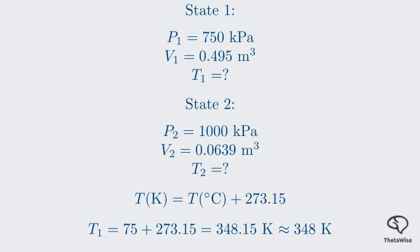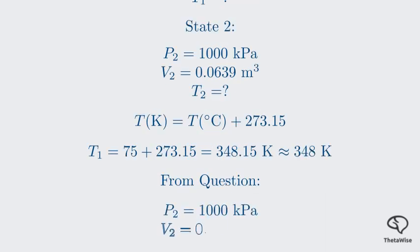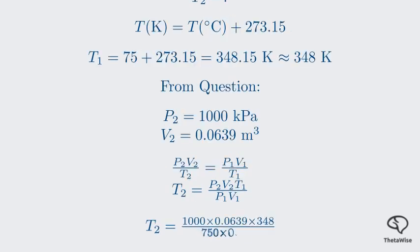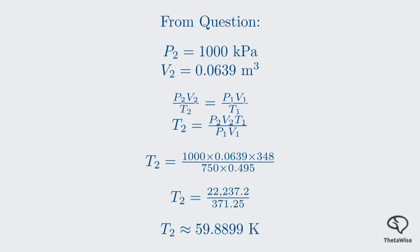Note that the memo lists P₂ as 1300 kPa, but the question clearly states P₂ = 1000 kPa — we must always follow the question. Rearranging the combined gas law to solve for T₂: T₂ = P₂V₂T₁ / (P₁V₁). Substituting: T₂ = (1000 × 0.0639 × 348) / (750 × 0.495).